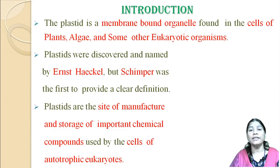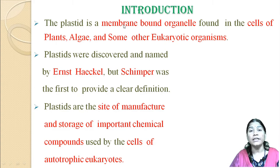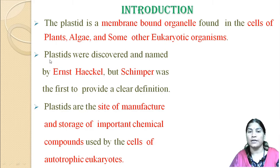Plastid is a membrane-bound organelle that is found in the cells of plants, algae, and also some eukaryotic organisms.